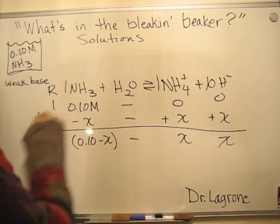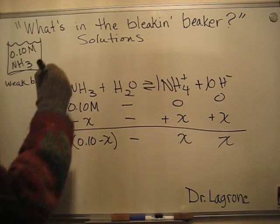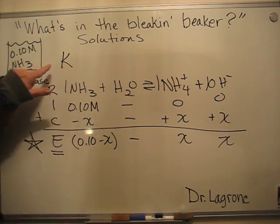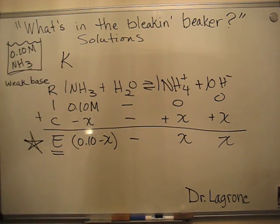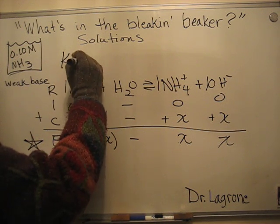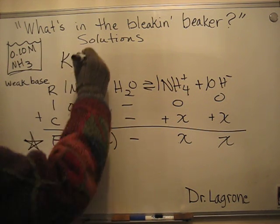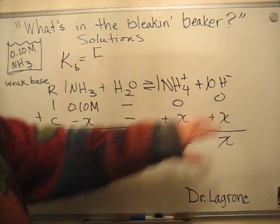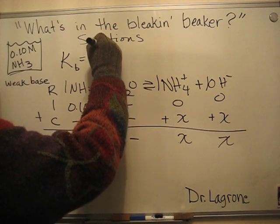Now let's see how we're going to set this K up when we're at equilibrium. We don't call it Q, we call it K. It's a base, so we give it a subscript b.